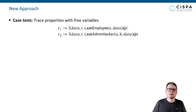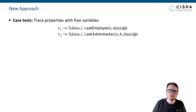To overcome the limitation on the number of parties, we first introduced the concept of case tests, inspired by the accountability tests of Bruni and coworkers. A case test is a trace property with three variables which can be instantiated by concrete parties. Let us come back to our example from the beginning. Here we define two case tests, each describing how the violation was caused. In the first case test, the data was leaked by an employee; in the second, a misconfiguration by the admin and its exploitation by a hacker caused the leak. Note that the variables of the parties are free in both case tests.